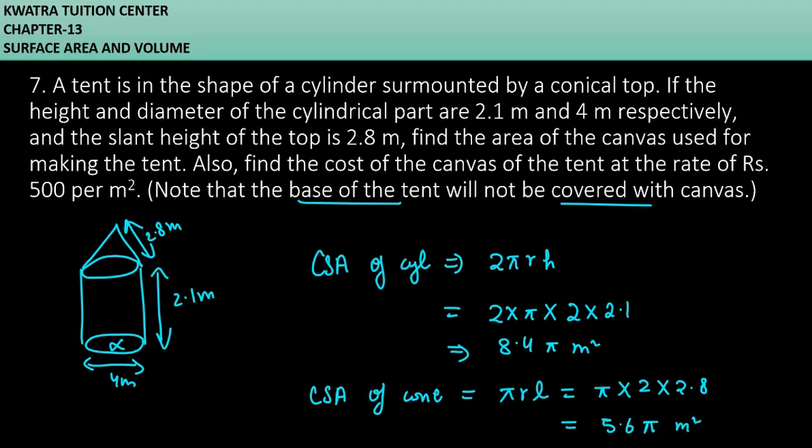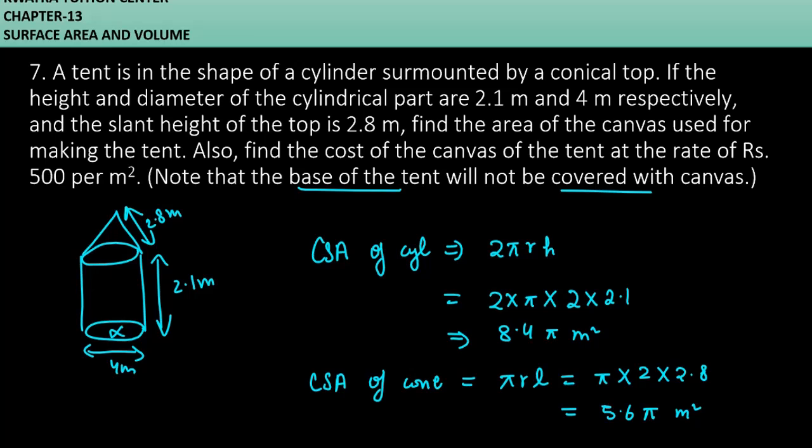So add them together, you will get the total surface area. So what will your total surface area be? It will be 8.4π plus 5.6π. Add them together, you will get 14πm². Now what do you place here? You will place π's value, which is 22 by 7. 7 will cancel from 14. 2 into 22 will give you 44m².